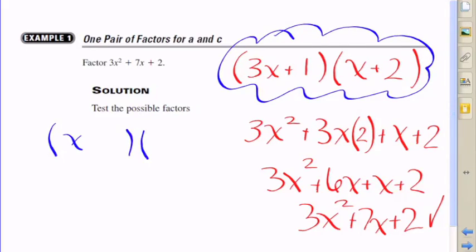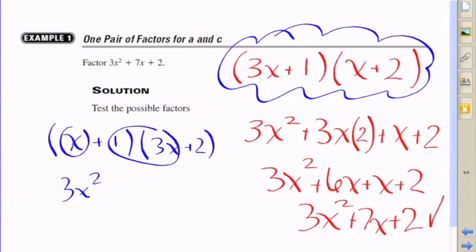Now this is what would have happened if I would have tried x first in the first position and 3x in the other. So of course I would still get 3x², but then 3x times 1 is 3x and 2 times x is 2x, so I would only get 5x for the middle and that wouldn't work out.